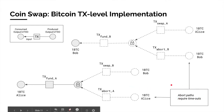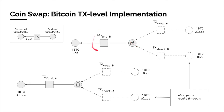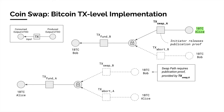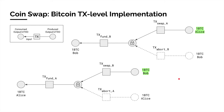Along the success path, Bob will also fund his side of the contract. Subsequently, Alice can then withdraw Bob's coin with her swap transaction, and in doing so, she releases a publication proof that she generated. With this publication proof, Bob can now execute his side of the swap contract and withdraw Alice's deposit, thereby completing the swap.